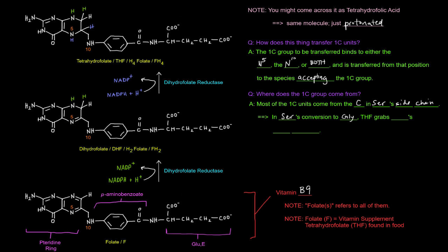Now, of course, serine's an amino acid. What happens is, in serine's conversion to glycine, which, of course, glycine doesn't have a carbon in its side chain, serine has one carbon in its side chain. THF will grab serine's side chain and basically take that one carbon group.